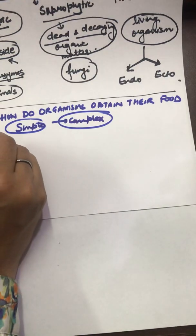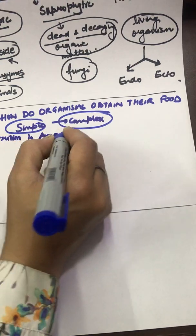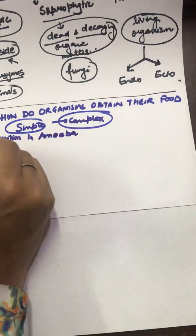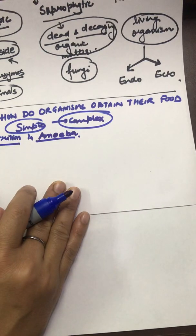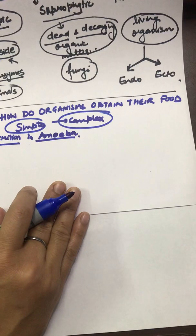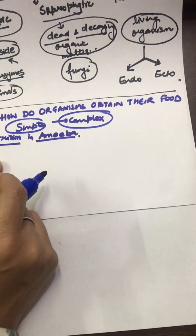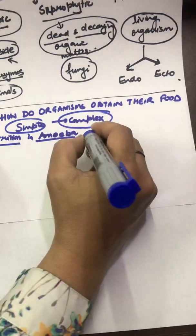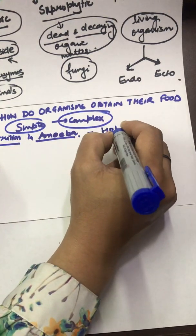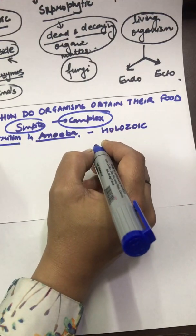Amoeba is a protozoan that lives at the bottom of freshwater pools, streams, or on submerged objects. It is a microscopic organism — we cannot see it with the naked eye. It obtains its nutrition by a holozoic mode, and the process of obtaining food is known as phagocytosis.